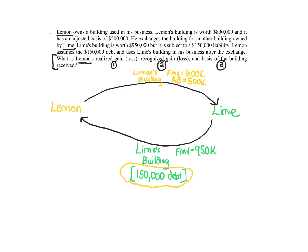Lemon is responsible for the $150,000 debt on Lime's building. I'm circling that in yellow to show it's being taken on by Lemon. So we've drawn a picture of what's going on. Lemon owns the building used in business, and we're also told that Lemon takes on the liability and uses Lime's building in his business. So Lemon is going to use this in business as well. That's obviously going to be important later on.